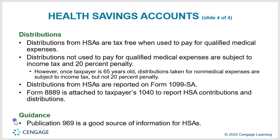Distributions from HSAs are tax-free when used to pay for qualified medical expenses. Distributions not used for qualified medical expenses are subject to income tax and a 20% penalty. However, once a taxpayer is 65 years old, distributions taken for non-medical expenses are subject to income tax but not the 20% penalty. Distributions are reported on Form 1099-SA, and Form 8889 is attached to the taxpayer's 1040 to report HSA contributions and distributions. Publication 969 is a good source for information about HSAs.